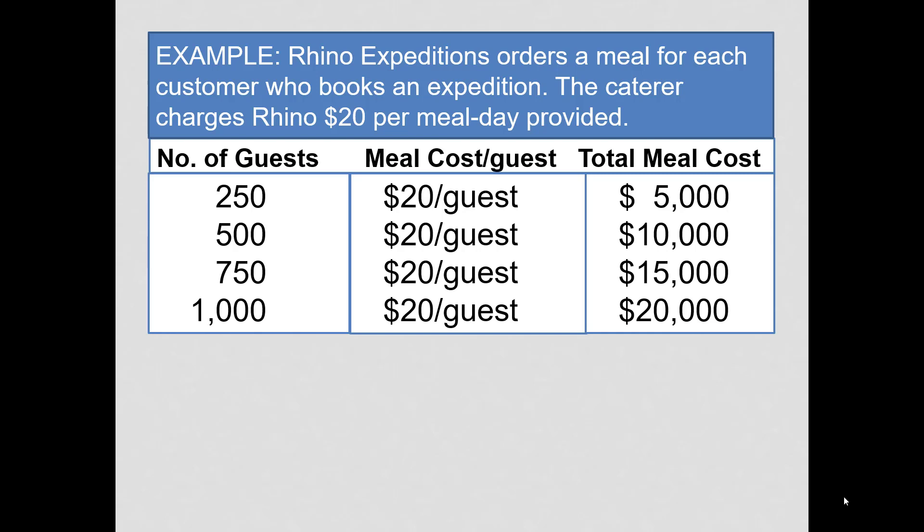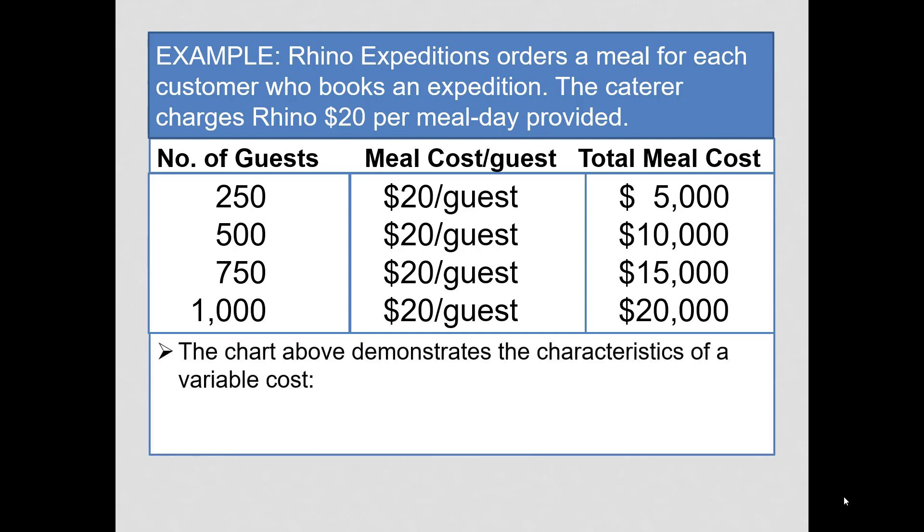Now, this chart, while the math is very simple, demonstrates two important characteristics about a variable cost. First, in total, it varies in direct proportion to activity. Second, the per unit amount remains constant within this relevant range.